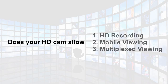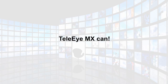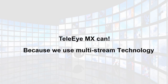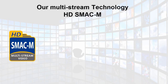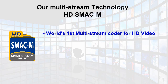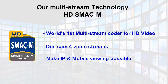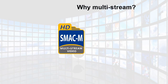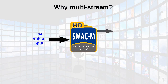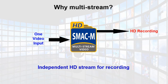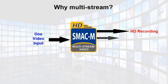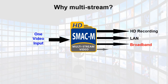Do your MX cameras record in high definition, give you mobile and multiplexed viewing? TeleEye's MX range can, because we use multi-stream technology. HD SMAC M is the world's first multi-stream high-definition video coder. It makes IP and mobile viewing possible. The first stream is built for high-definition video recording. The other streams are used for fast transmission via LAN, broadband network and mobile phone viewing.